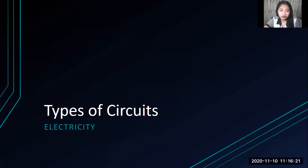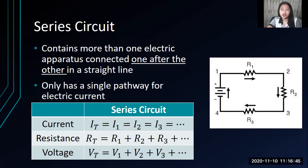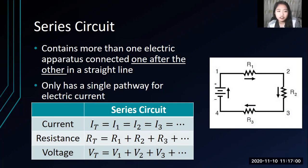The first type is a series circuit. A series circuit contains more than one electric apparatus connected one after the other in a straight line. All components are connected sequentially — just like in the picture on the right side, where we have a battery and three resistors connected one after another. You place one component, then a wire, then another component, and so on until you complete the whole closed circuit. A series circuit has only a single pathway for electric current.